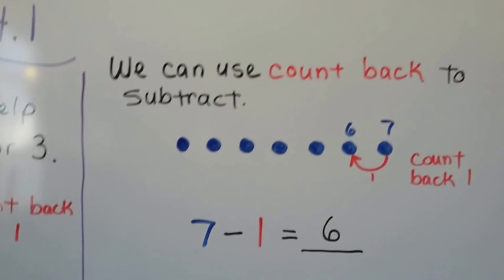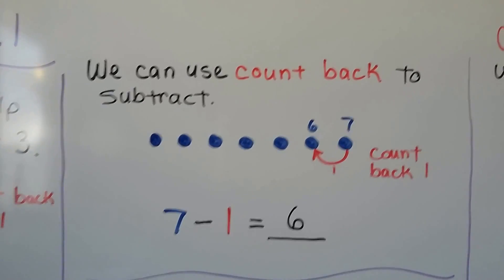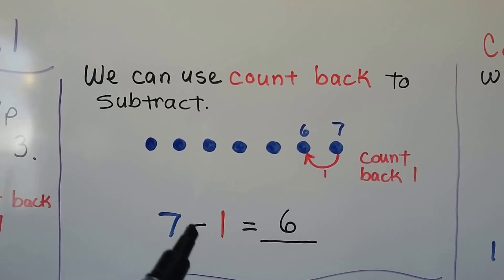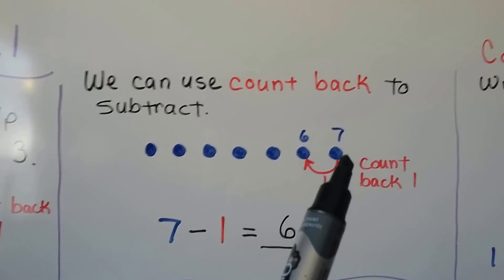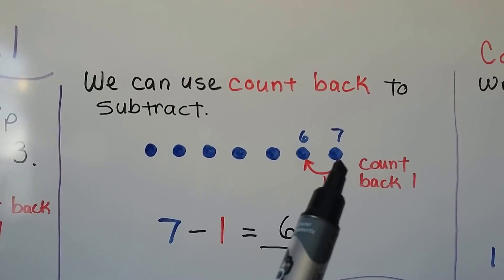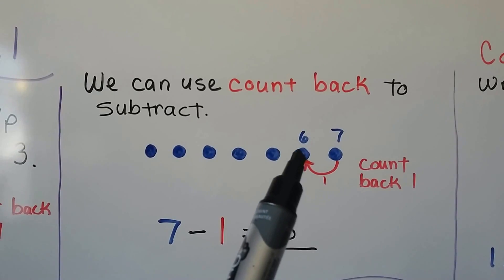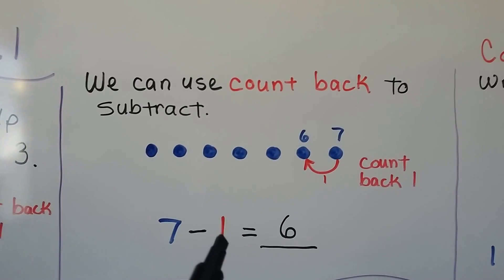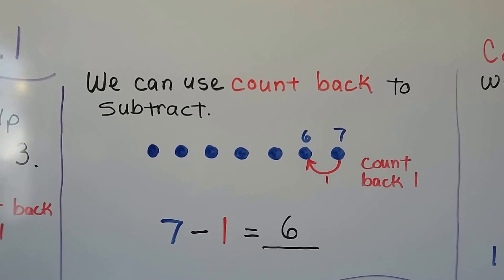We can use count back to subtract. 7 minus 1. We have seven counters. We count back 1. 7 minus 1 — that brings us to 6. 7 minus 1 is equal to 6.